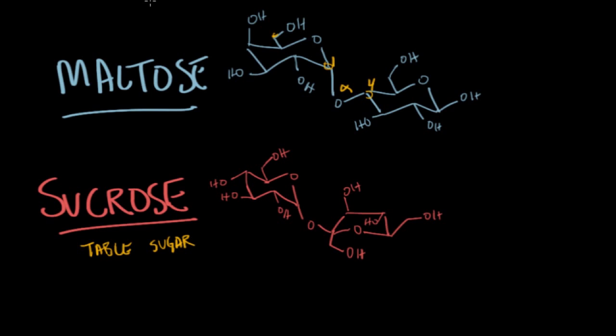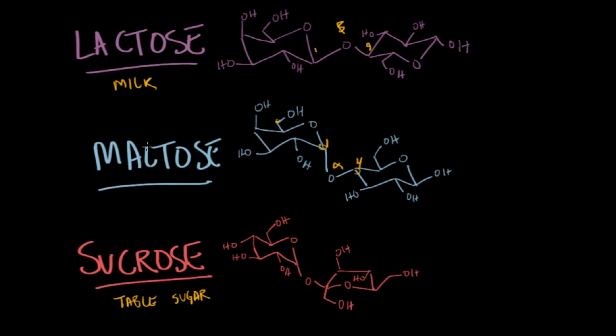But it's different substantially from maltose and lactose. I want to point out a couple of key differences. In lactose and maltose, both of these, you have two pyranoses. Remember pyranoses are six-membered carbohydrate rings. We have two six-membered rings bound together by this glycoside.